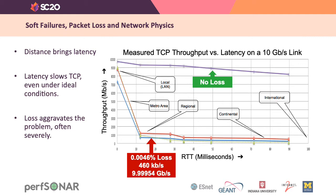On a 10 gigabit per second link, that's about 460 kilobits per second being dropped on the floor. That doesn't sound like much when you look at how much bandwidth you have left, which is most of the link's capacity. But because TCP sees loss as congestion, it slows itself down. By the time you have more than about a 12 millisecond round trip, that loss has cost you almost 90% of your carrying capacity, and it only gets worse as the numbers get bigger.